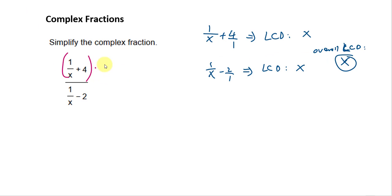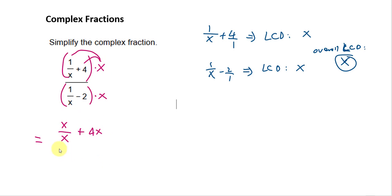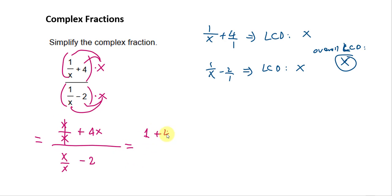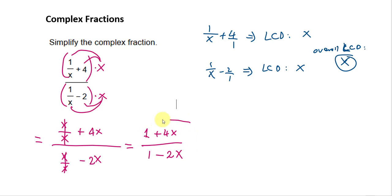We multiply both the top and bottom of the complex fraction by x. Distributing on top: x times 1 over x gives 1, and x times 4 gives 4x, so the top becomes 1 plus 4x. Distributing on the bottom: x times 1 over x gives 1, and x times 2 gives 2x, so the bottom becomes 1 minus 2x. There's nothing further to factor or cancel, so the final answer is 1 plus 4x over 1 minus 2x.